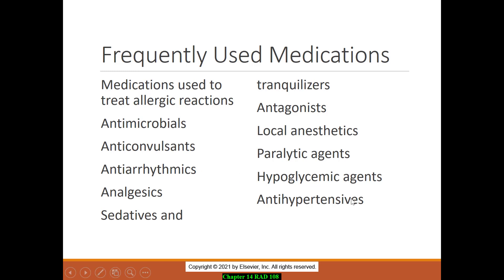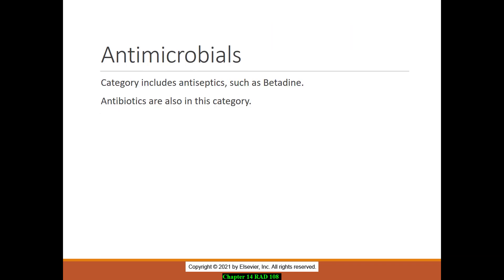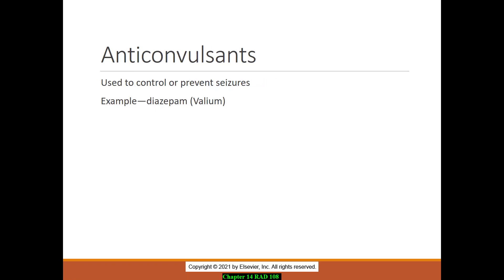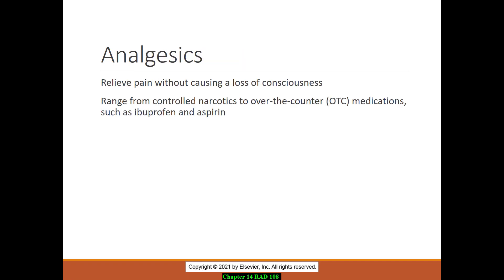There are some frequently used medications in the department to be aware of. An antihistamine, commonly known as Benadryl, is something used in imaging. Epinephrine is used for several types of reactions. Antimicrobials such as Betadine are antibiotics. A patient may mention they are taking Valium or diazepam, which helps control seizures. Some patients have heart conditions and cardiac arrhythmias. Analgesics relieve pain without causing loss of consciousness, and can include over-the-counter medications such as ibuprofen or aspirin.